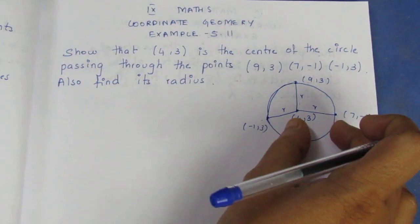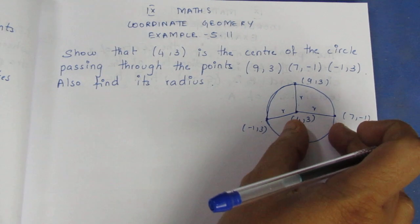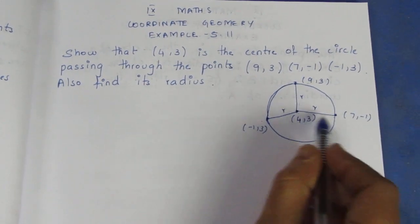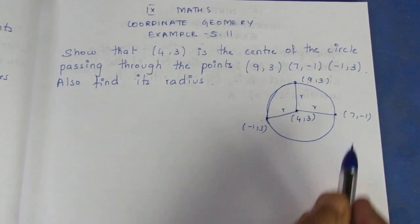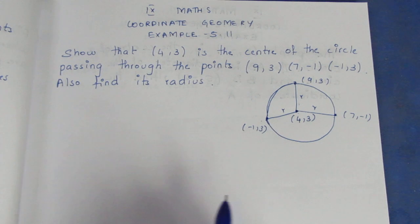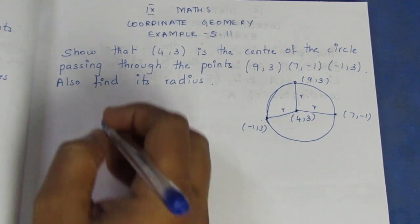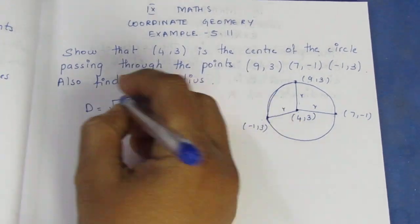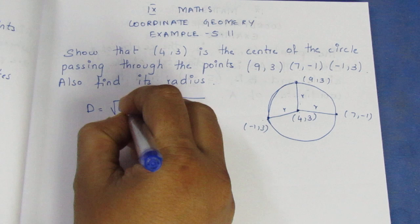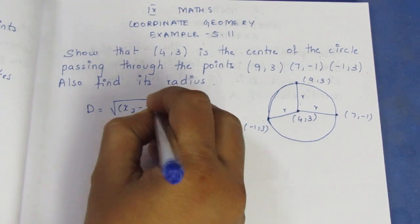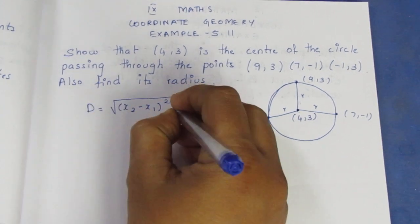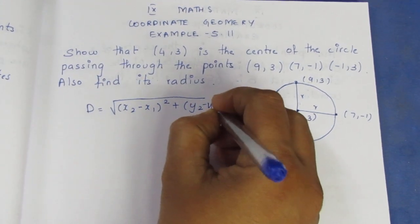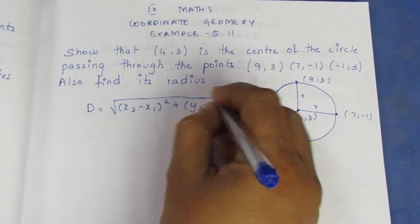Okay. If we adjust our length now, we use the distance formula. Distance = root of (x2 minus x1) the whole square, plus (y2 minus y1) the whole square.